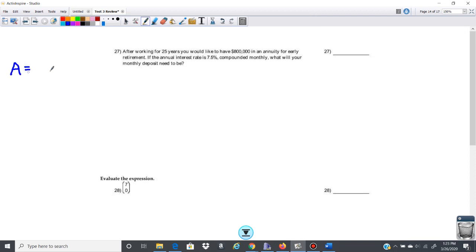So A is going to be the amount after time. You have P, and then P is times 1 plus i to the nt minus 1, and then that is over i.